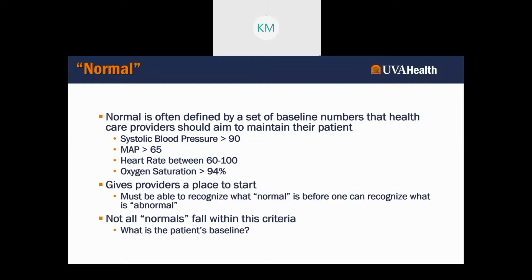So we really need to understand what the patient's baseline is before we start making judgments. Even something like O2 saturation — my patient who has COPD may have a normal O2 saturation of 89%, and that's totally okay for them. So it's figuring out where your patient is to begin with before we start making judgments about needing to intervene.